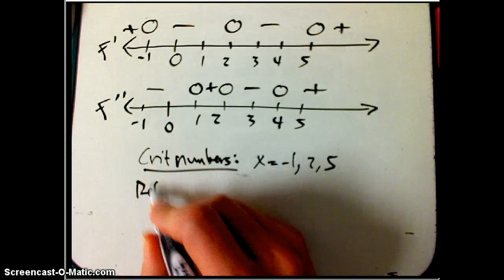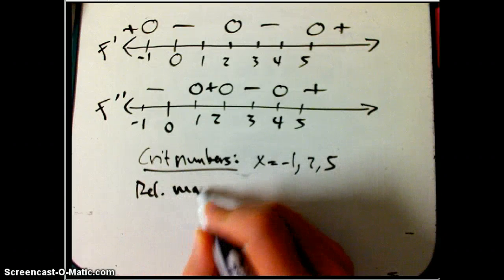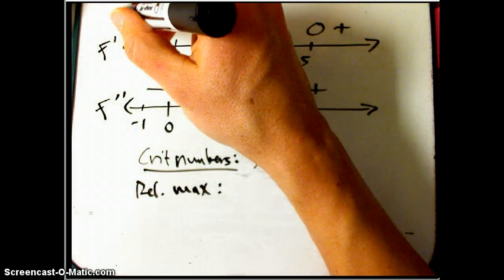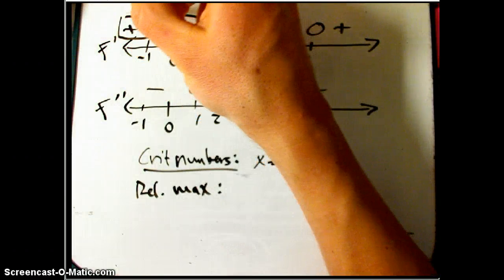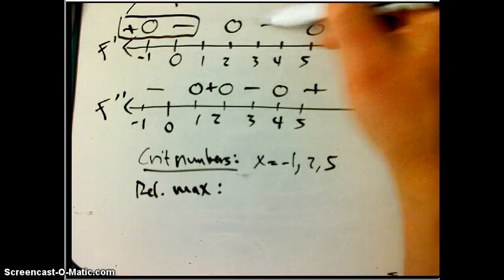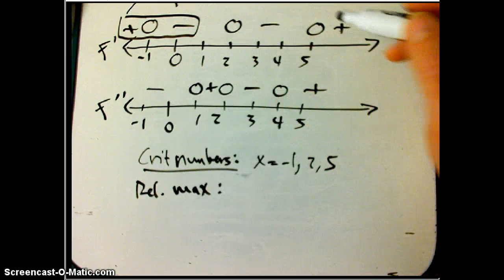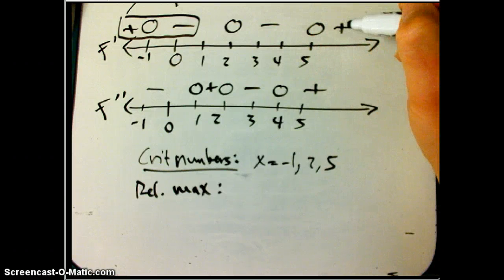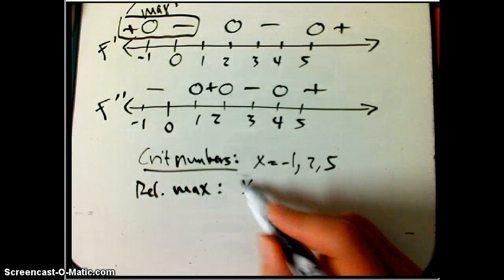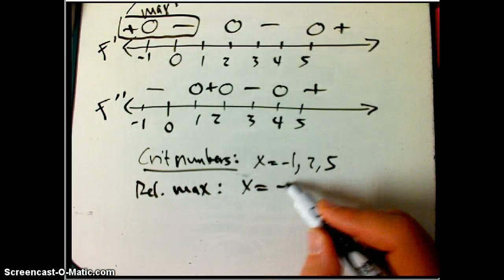Let's look for relative maxima. So by the first derivative test, we look for up, then flat, then down. Looks like this. And this is a down, flat, down. That's going to be a downhill rest, so that's definitely not a max. This is a down, flat, up, so it's not a max. So this guy's a max. And so that's just going to be x equals minus one is the only relative max.